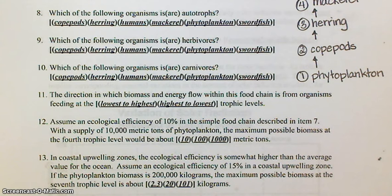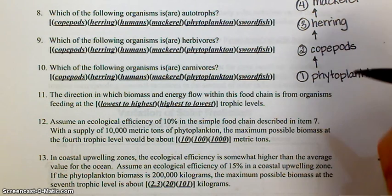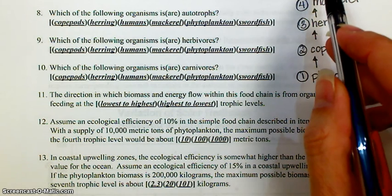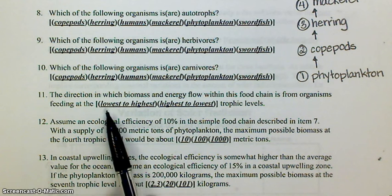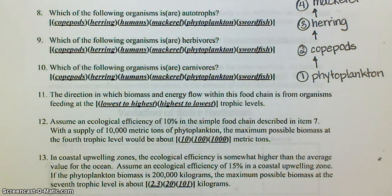The direction in which biomass and energy flow within this food chain is from organisms feeding at what level to what? Remember, you start at the lowest and go up to the highest — so you're going from lowest to highest trophic levels. That's number 11.